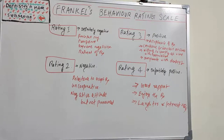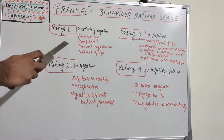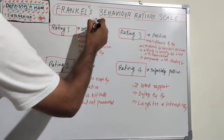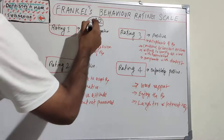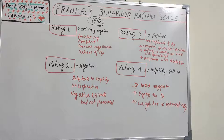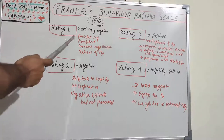Rating one is given as 'Definitely Negative.' This was put forward in 1962. These types of kids show refusal of treatment, forceful crying, fearfulness, or any other overt evidence of extreme negativism. This kid is very difficult to manage because they show a definitely negative character.